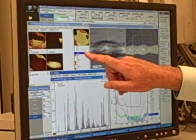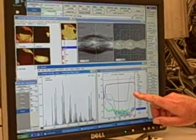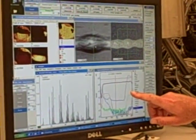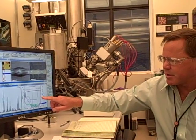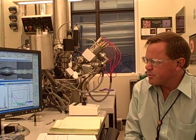Alternatively, we can perform the depth profile measurement where we monitor the surface composition, erode, sample subsurface, and repeat the cycle to get the distribution of species as a function of depth.